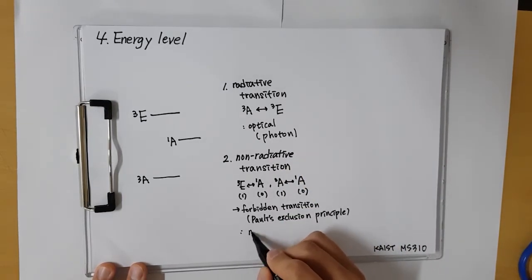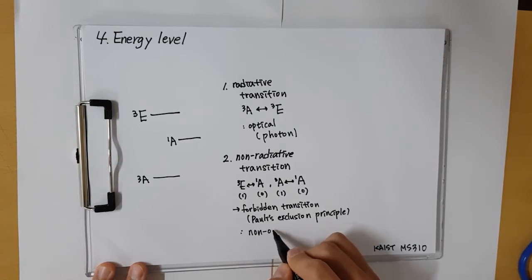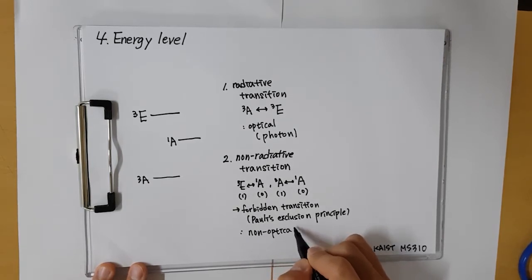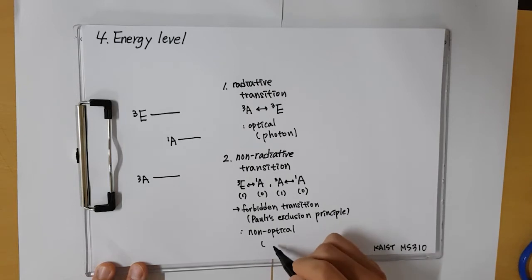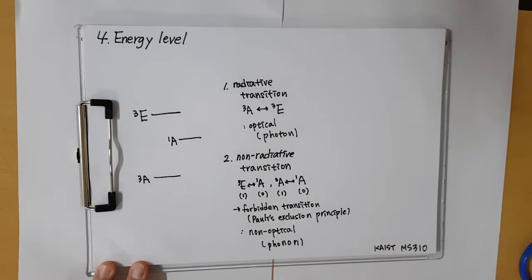Radiative is optical transition, a transition in which energy is released in the form of light by the emission of photon that does not change the total spin. However, non-radiative is not optical transition. It is transition in which a phonon is released. Phonon does not release energy in the form of light, but it releases energy in the form of heat or sound.